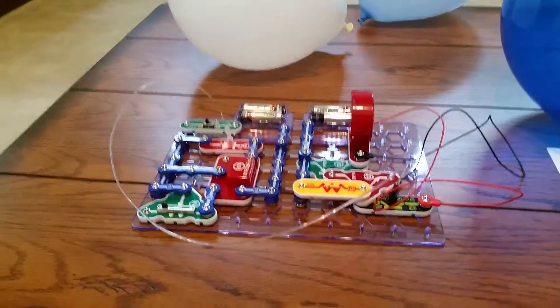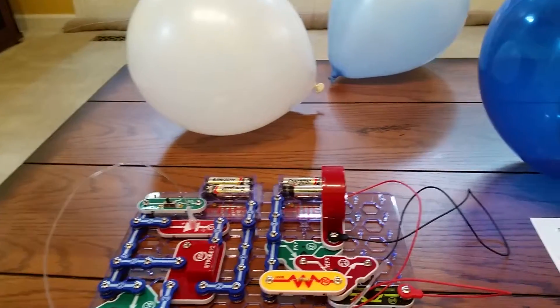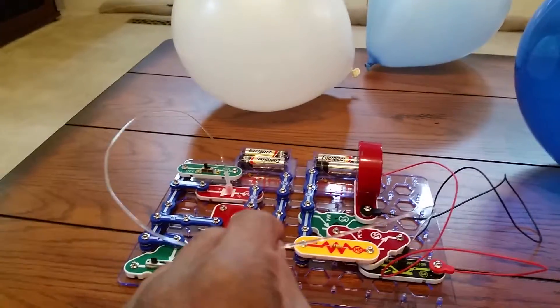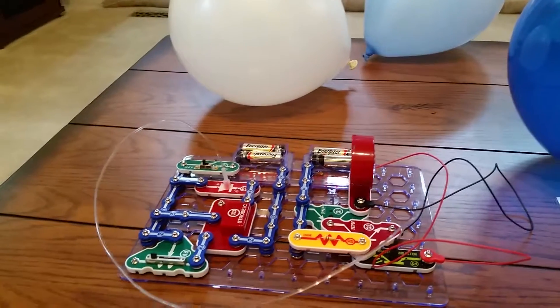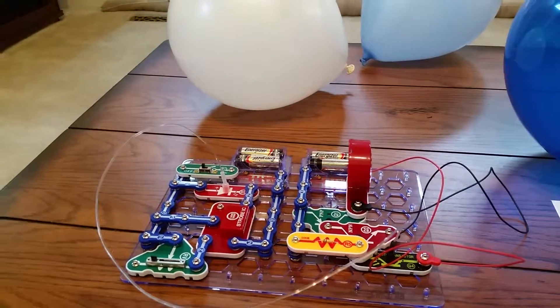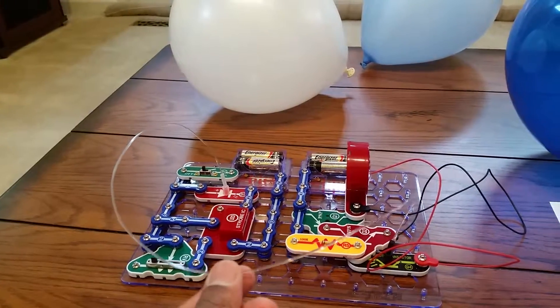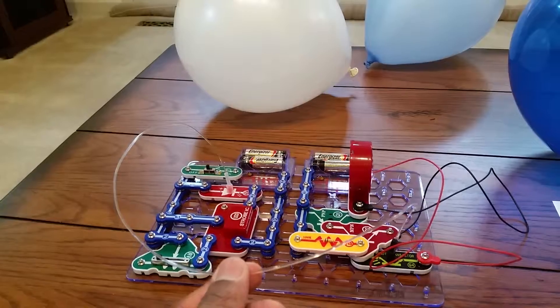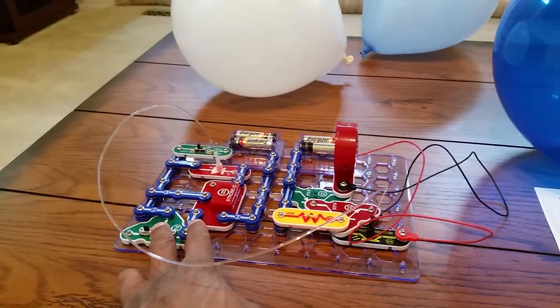The only connections between the left half of the circuit and the right half of the circuit is this fiber optic cable. The rest of the communication is all on wires, but this is the only connection between the two halves of the circuit. In reality, this half of the circuit could be miles away from this half.